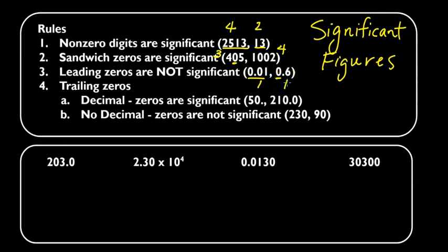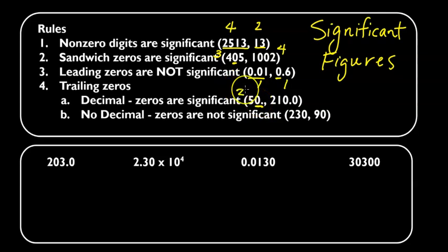Trailing zeros are sometimes significant or not significant depending on whether or not they have a decimal. If it has a decimal, the zero is significant. So this first number has a decimal right there, and so this zero is going to be significant — this has two significant figures.